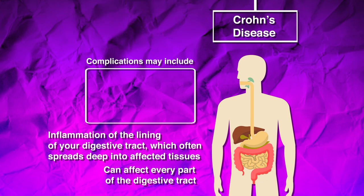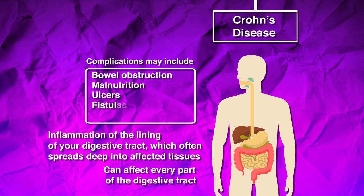Complications for Crohn's disease include bowel obstruction — thickening and narrowing the bowels, which may block the flow of digestive contents — malnutrition, ulcers, fistulas, and abnormal connections between different body parts created by ulcers. Also, an anal fissure, a small tear in the thin, moist tissue that lines the anus.